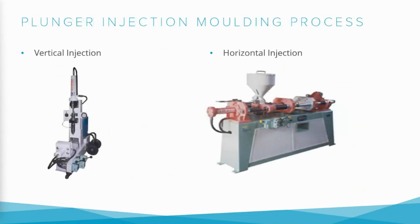Next we have plunger injection molding. We have two types: vertical injection and horizontal injection. Unlike regular injection molding machines, these plunger-based machines don't have a screw inside them. The plungers are connected to a hydraulic cylinder, which pushes the material forward and retracts the stroke. Plunger-type injection molding machines are used where the product size is small and production of fewer parts is required.